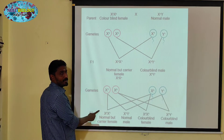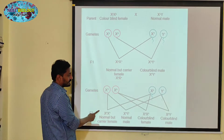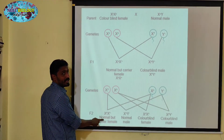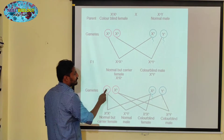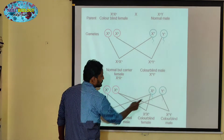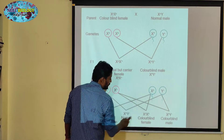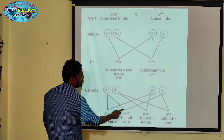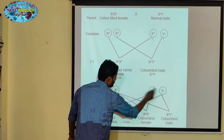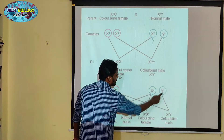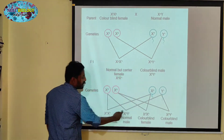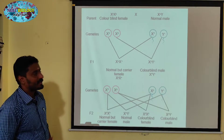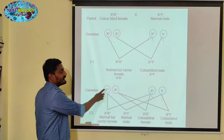Normal X is colorblind X, giving a carrier female. Normal X is normal Y, giving a normal male. The colorblind expression is present in this generation.